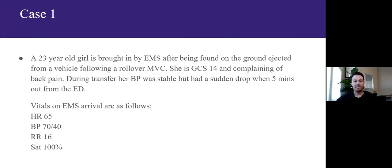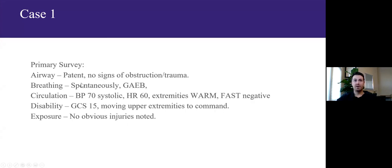The initial patch sounded quite benign, but EMS patched back five minutes out saying the patient is now hypotensive. On arrival, her vitals are: heart rate 65, blood pressure 70/40, respiratory rate 16, saturation 100% on room air. Primary survey: airway patent, no signs of obstruction or trauma, no breathing concerns. Circulation exam is abnormal — quite hypotensive with heart rate 60. She has warm extremities, a negative FAST, and neurologically she's moving her upper extremities but not her lower extremities, with no other obvious injuries noted.